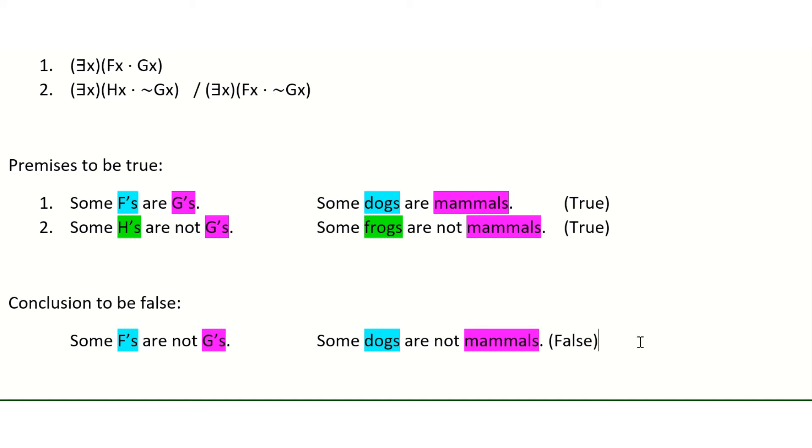Now, looking forward, the thing to watch out for with counterexamples is just, again, make sure that the form of the ordinary language counterexample is an exact match for the predicate logic. And you can color code or use any method that you were using before, but you want to make sure that you're not switching the position of one of the predicates.